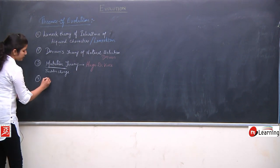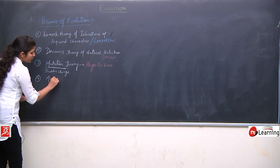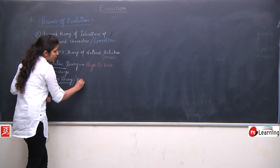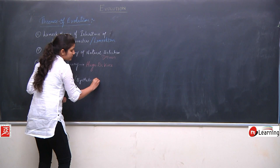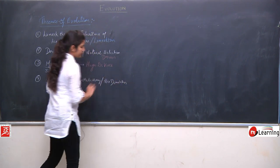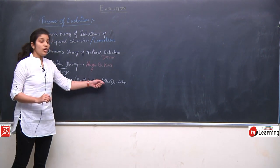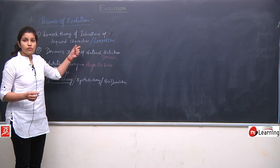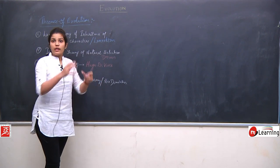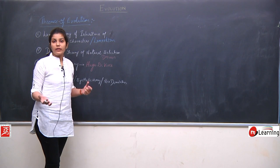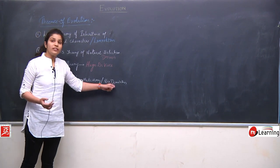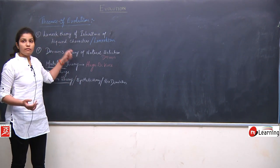The fourth and last theory is the modern theory, also called the synthetic theory or neo-Darwinism. It is formed by the combination of all three earlier theories. The evidences in favor of these theories were compiled and further studied by various scientists, who put forward this modern or synthetic theory. Now we will start studying all these theories one by one.